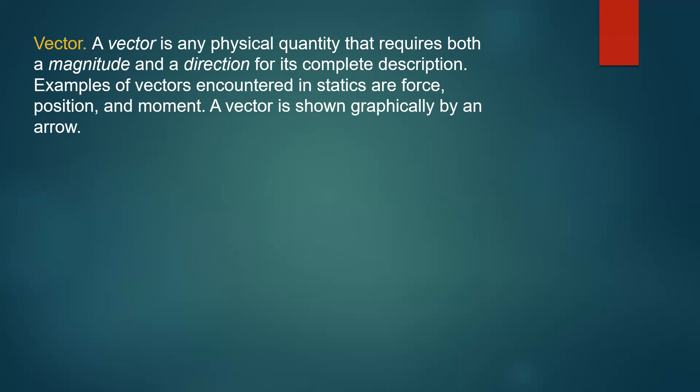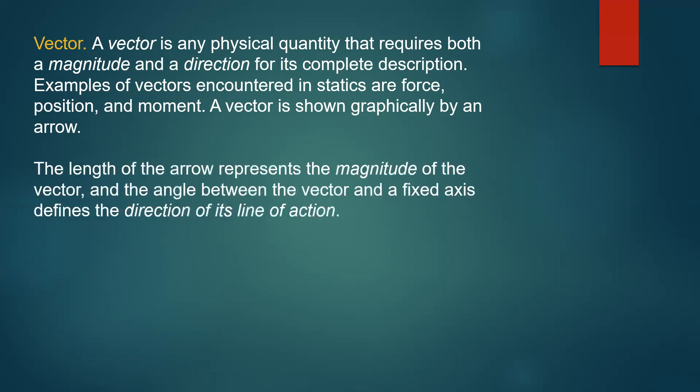A vector is shown graphically using an arrow — it will have what is known as a tail and a head. The length of the arrow represents the magnitude of the vector, and the angle between the vector and a fixed axis defines the direction or line of action.